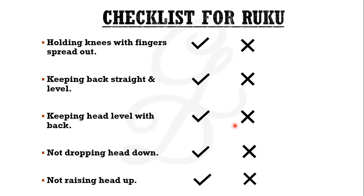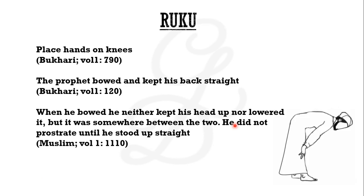There is a checklist available if you want to do a workshop or work with somebody. It's great to use with children — there is a children's salah course available on the website which is basic level and doesn't go into the fiqh. The checklist covers: holding the knees with fingers spread out, keeping the back straight, and keeping the head level.